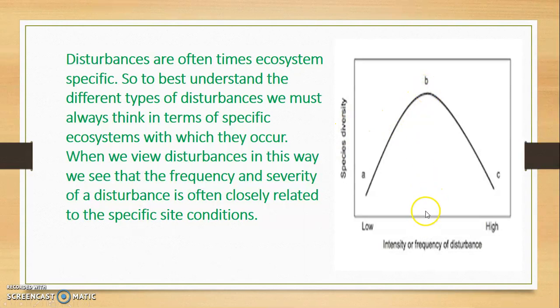But after this intermediate state as we are increasing the frequency of disturbance, the intensity or the species diversity will automatically decline or it will decrease. First it will increase and it will decrease.